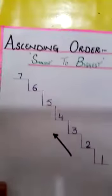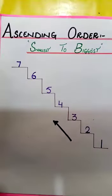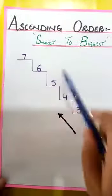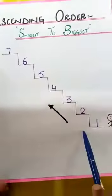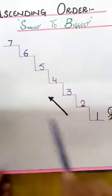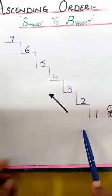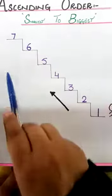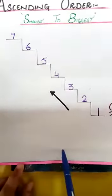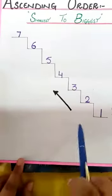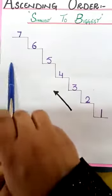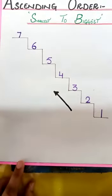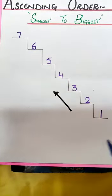Today's topic is ascending order. Ascending order means from smallest to biggest — from smallest to biggest. The boy is standing over there; when he goes onwards in the forward way, that order is called ascending order. Jab hum chote se bade ki taraf jayenge, to us order ko hum ascending order kahenge.